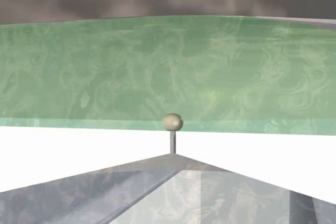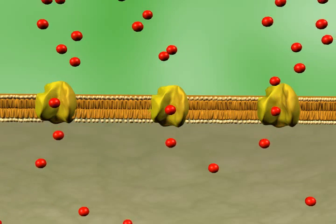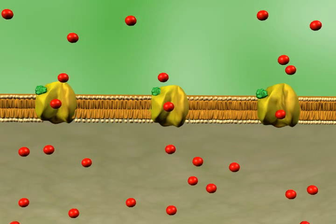Zooming into the level of the ion channel proteins in the plasma membrane shows how the test compounds can bind to the channels and inhibit the flow of ions.